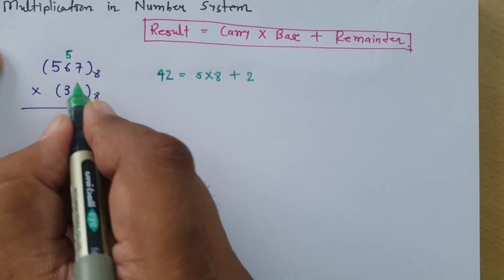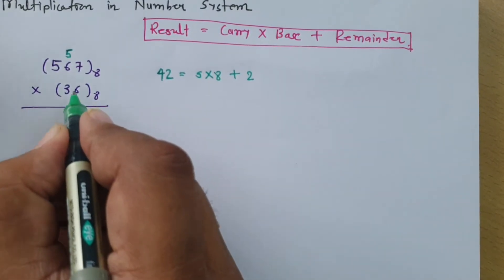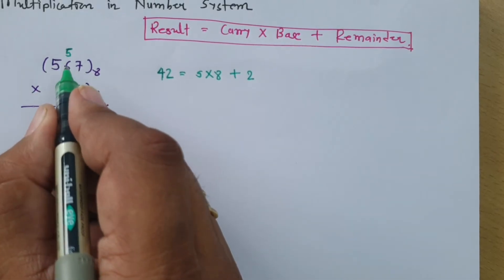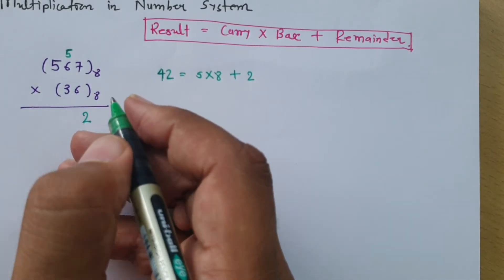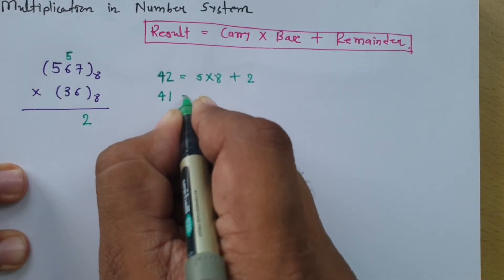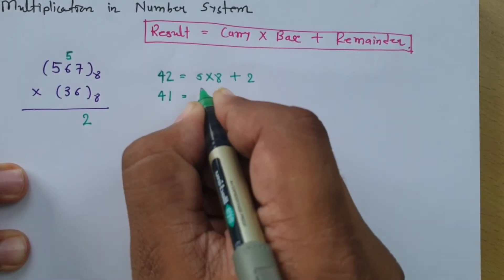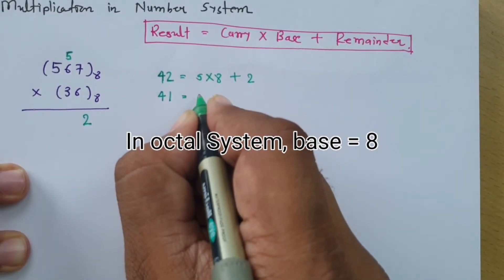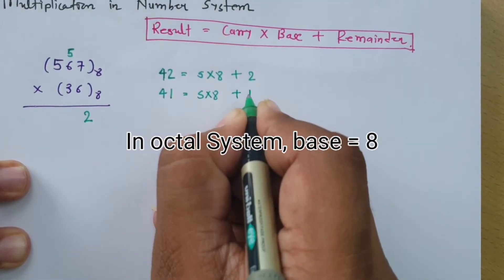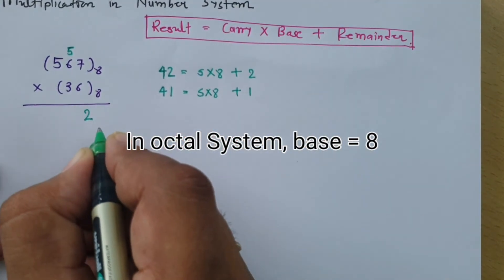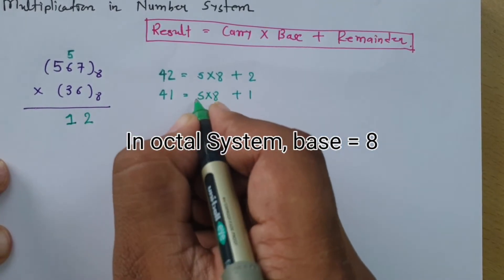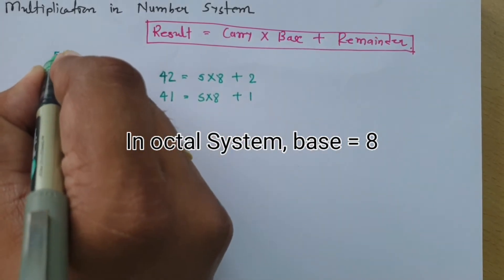Next is 6 into 6, which is 36, plus the carry of 5, giving us 41. Now 41 in the octal formula is 5 × 8 plus 1, so here 1 is the remainder, which I write in the result, and carry 5 is placed to the next position.